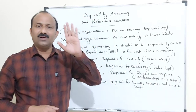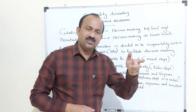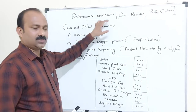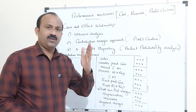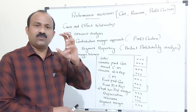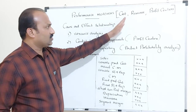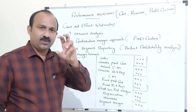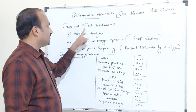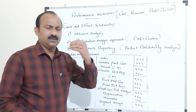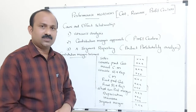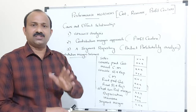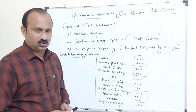Now you are able to understand which one is a cost center, profit center, investment center, and revenue center. Next, we have to discuss performance measures — how we are going to find out the performance measures of the organization for costs, revenue, and profit centers. Performance measurement always depends upon a cause and effect relationship.